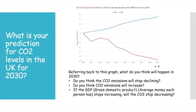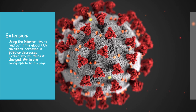This is the extension for everybody who has finished the lesson completely. You will need the internet. Go online and see if you can find what has happened to CO2 or carbon dioxide emissions — whether they've increased or decreased in 2020. Explain why you think they've changed; there are lots of different reasons, and a lot of them are already hinted at in the PDFs. Think about what's happened in 2020 and try to find out if global CO2 has increased or decreased, then explain why.